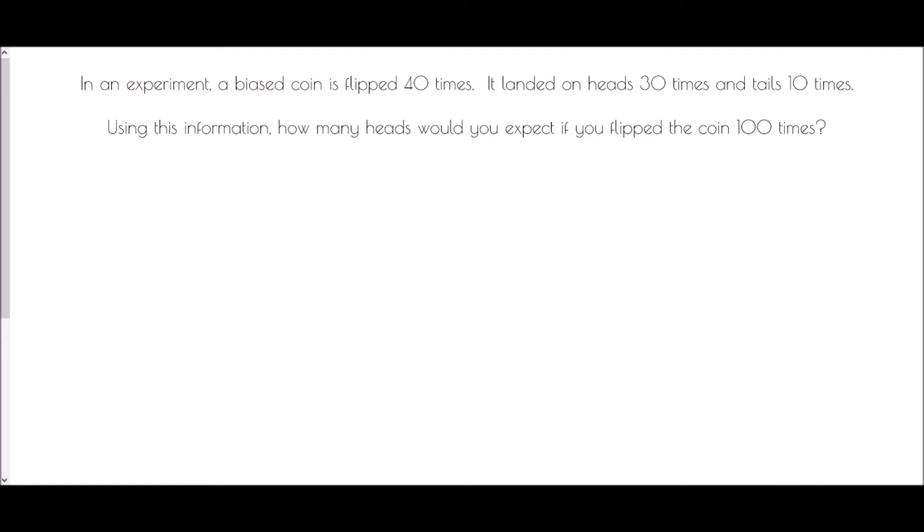Now it's asked us to use this information to find out how many heads I would expect if I flip the coin 100 times. Expected outcomes come from the probability multiplied by the number of trials. But in this case we don't have a probability because we don't know exactly what the probability is. But what we do have is an experiment, so we've got a relative frequency.